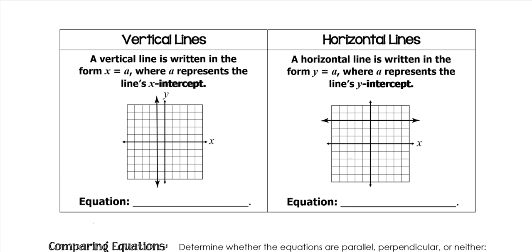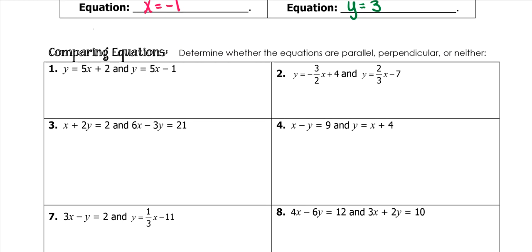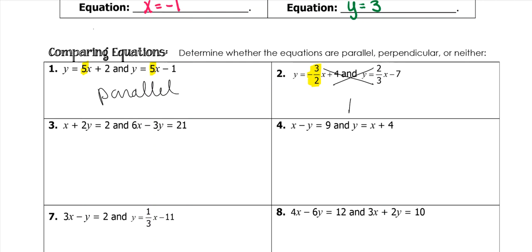Vertical lines, because they pass through the x-axis, will always say x equals whatever the x value is — in this case negative 1. Horizontal lines, because they pass through the y-axis, will always be y equals wherever that y value is — in this case positive 3. To compare if lines are parallel or perpendicular when in slope-intercept form, compare the slopes. Since they are the same, they are parallel. If one is positive and one is negative and they flip-flop, they are perpendicular.